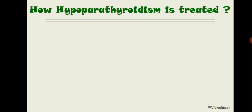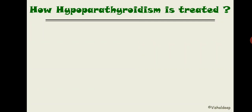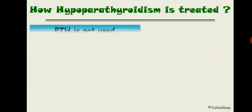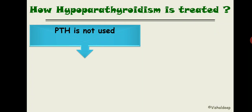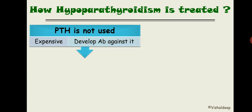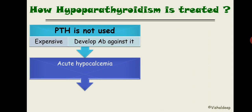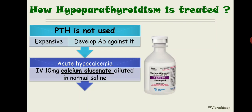How is hypoparathyroidism treated? We do not give parathyroid hormone itself because it is very expensive and the body develops antibodies against it. After two to three administrations, the person's circulation already has antibodies preventing its action. Instead, we treat the main clinical feature — hypocalcemia.